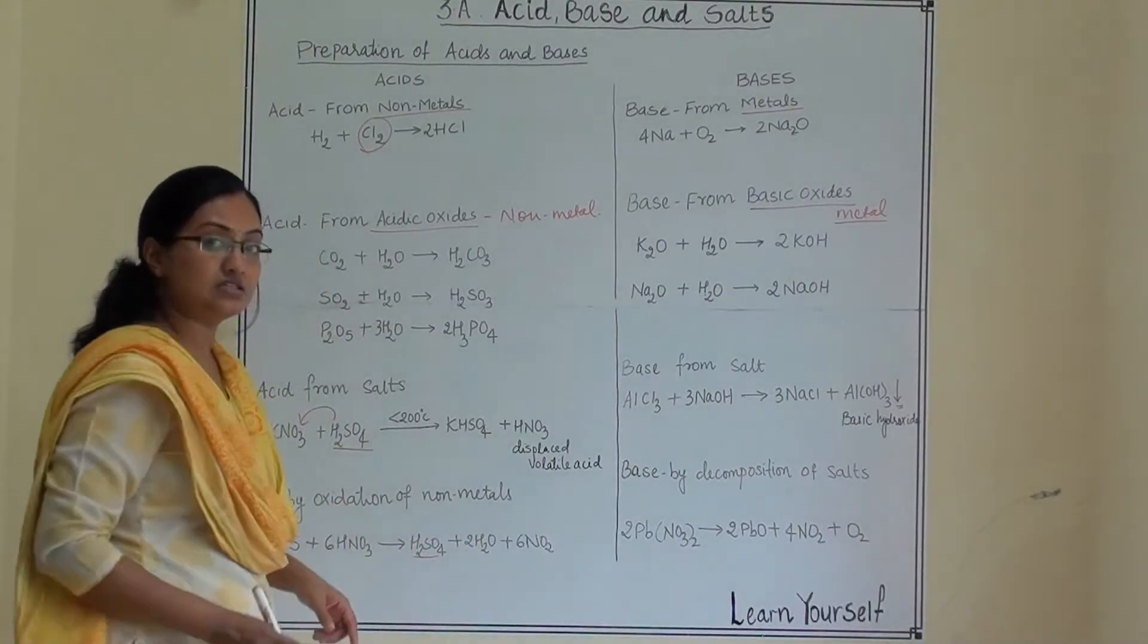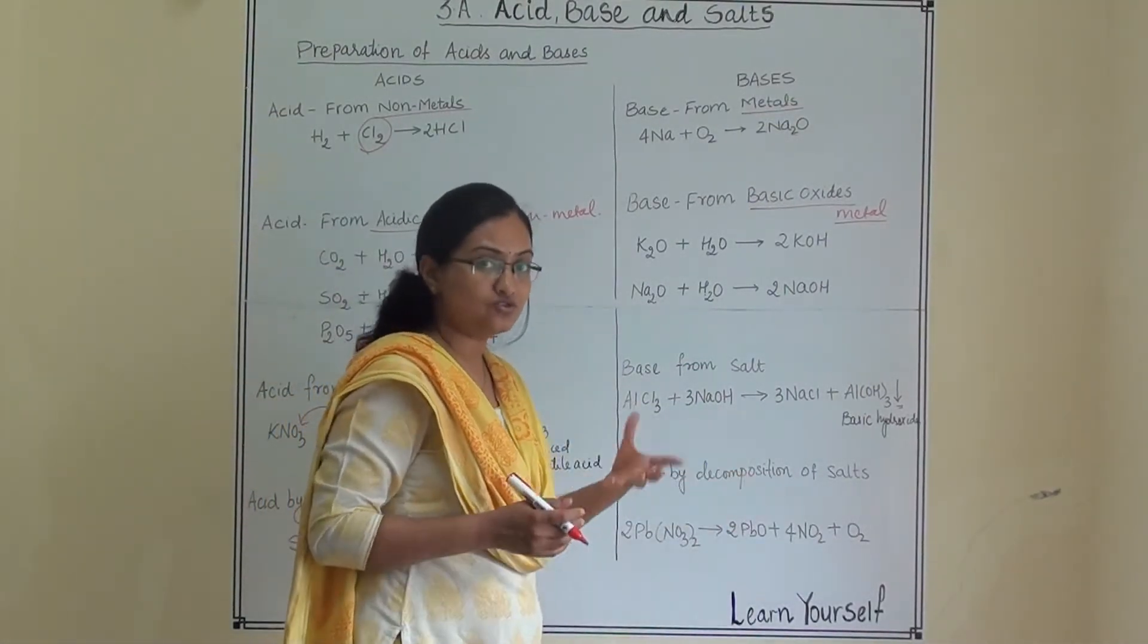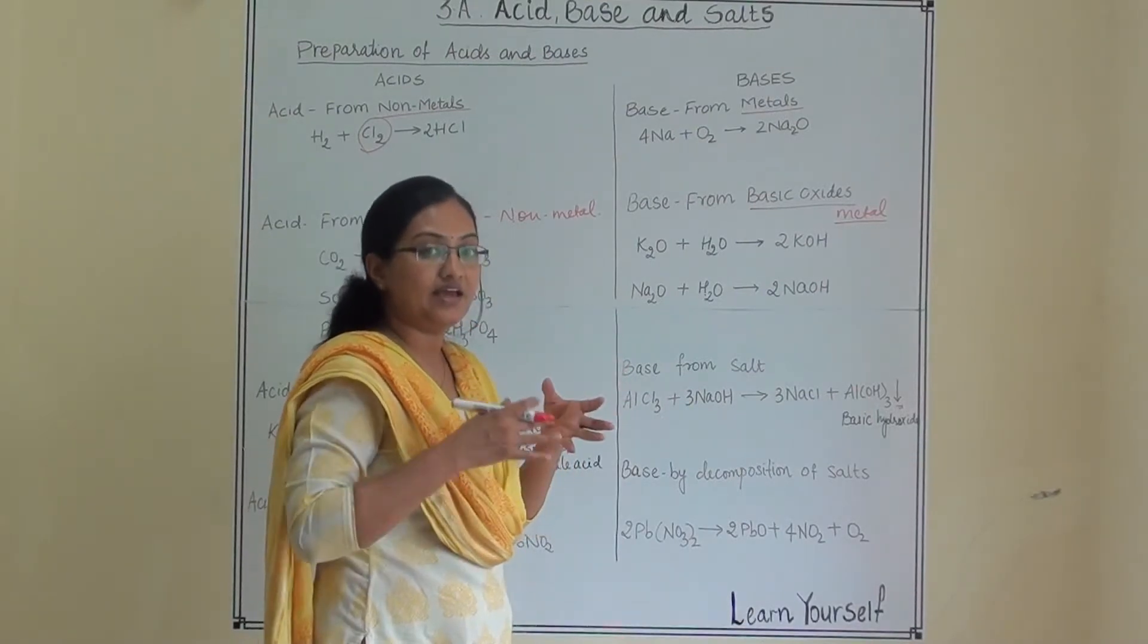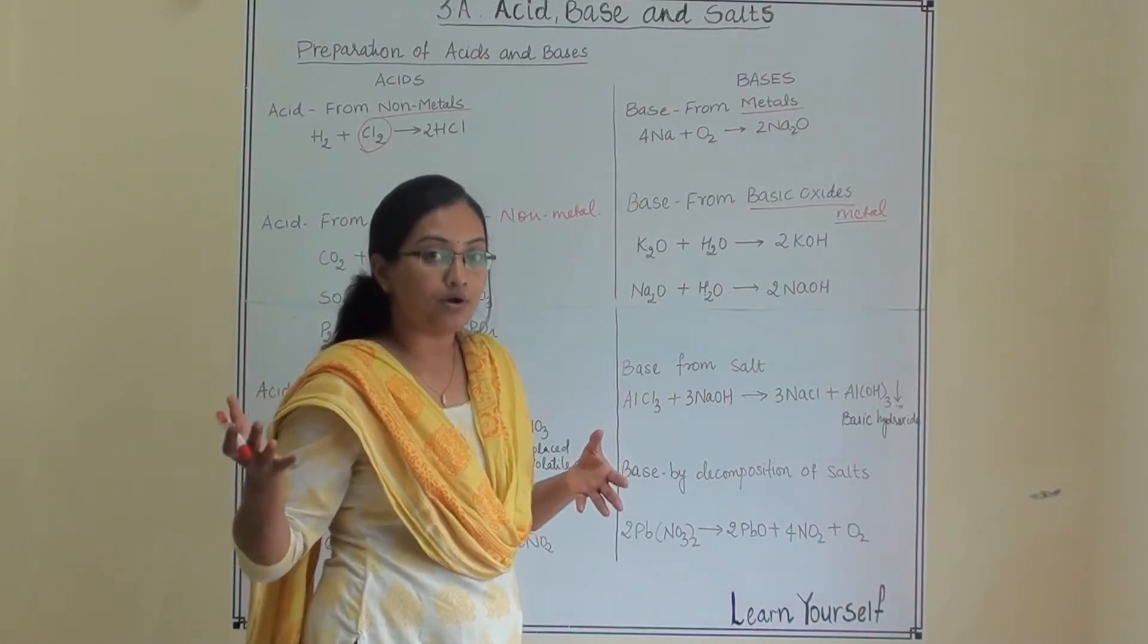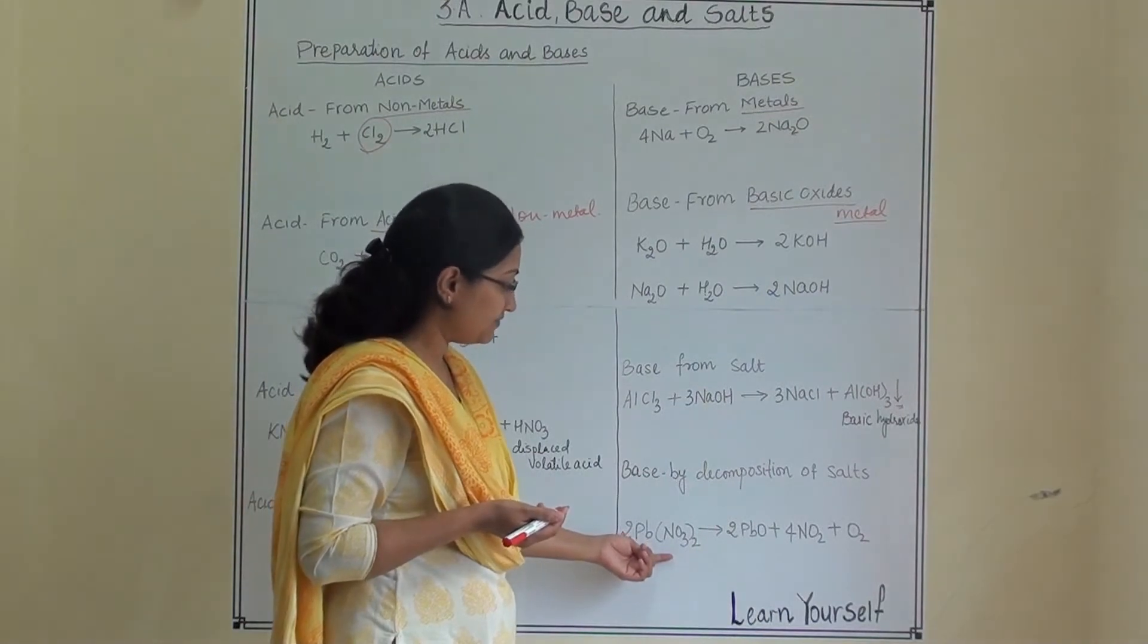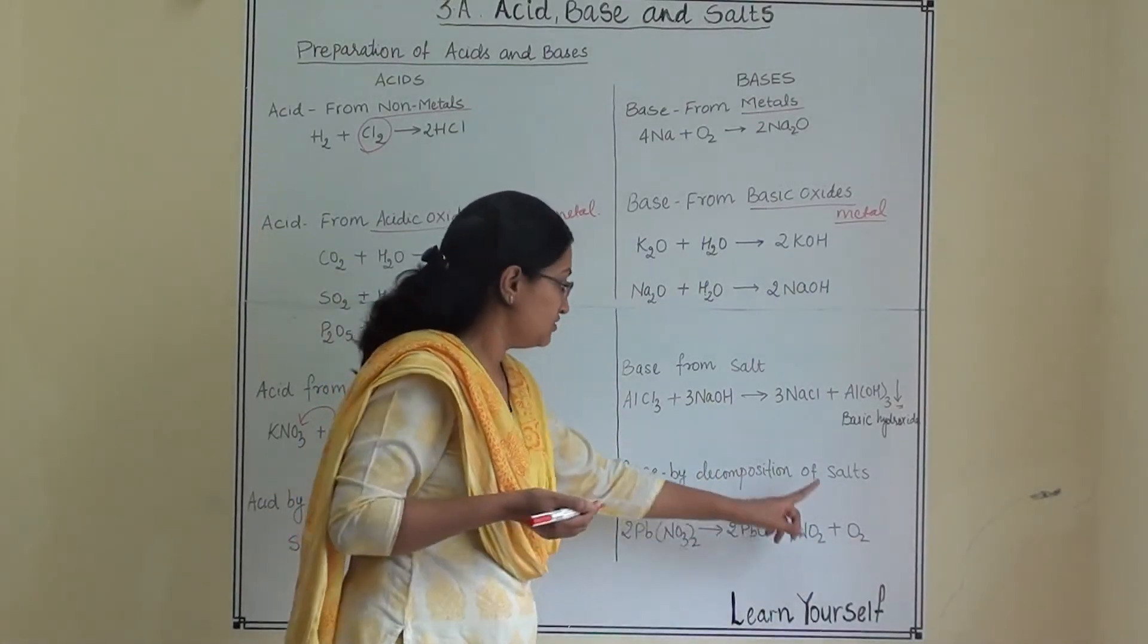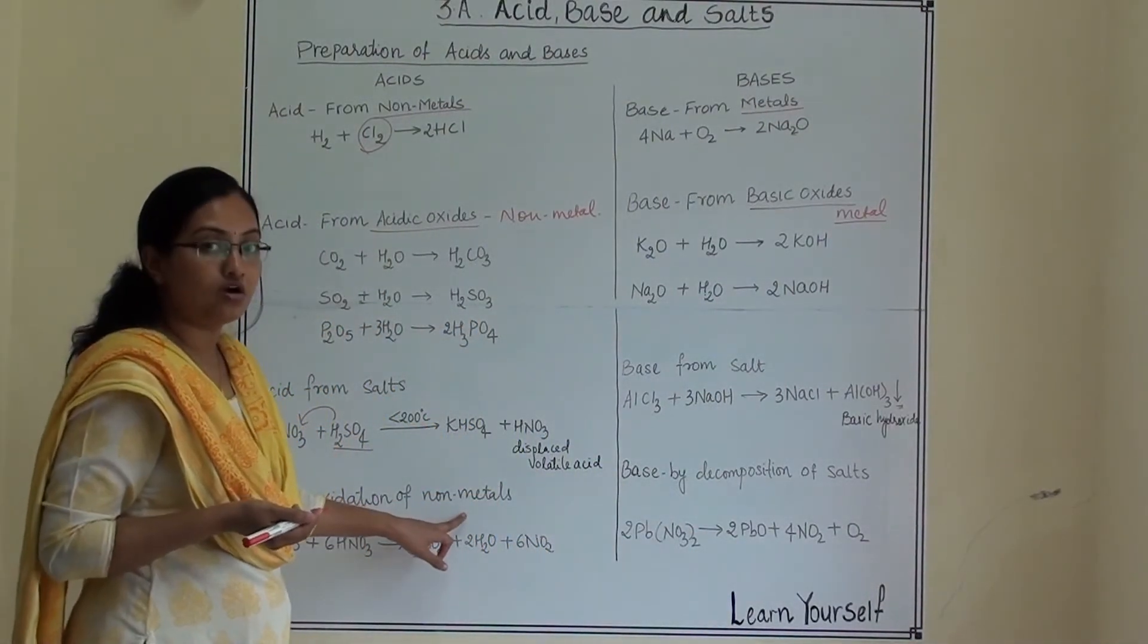Now base by decomposition of salt. One salt you are breaking into pieces. That is a decomposition reaction. When you are taking one reactant and for a product you are getting two or three different compounds, then it is a decomposition reaction. So lead nitrate we are taking and it undergoes heat. Then we will get lead oxide, nitrogen dioxide and oxygen. So this is by decomposition of salt and this is oxidation of non-metals.